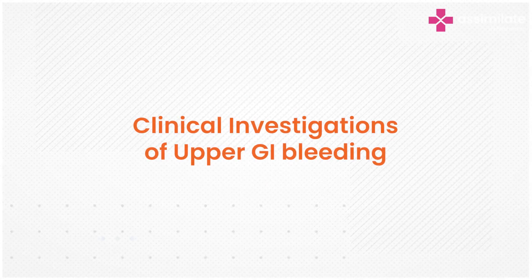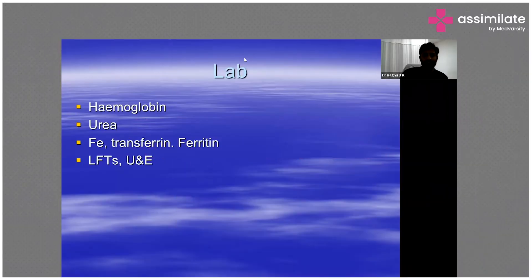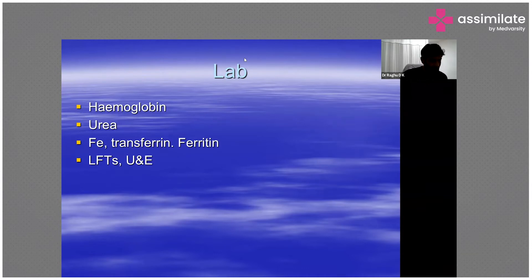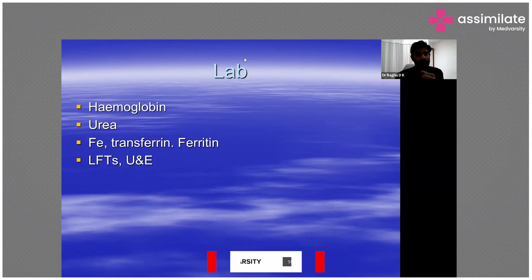After the history, physical examination, and resuscitation, the next step is labs. The first thing to check is the hemoglobin level — was there a significant drop? Urea is also important; it is usually elevated in upper gastrointestinal bleeding because the heme portion of hemoglobin gets broken down, which increases the urea.